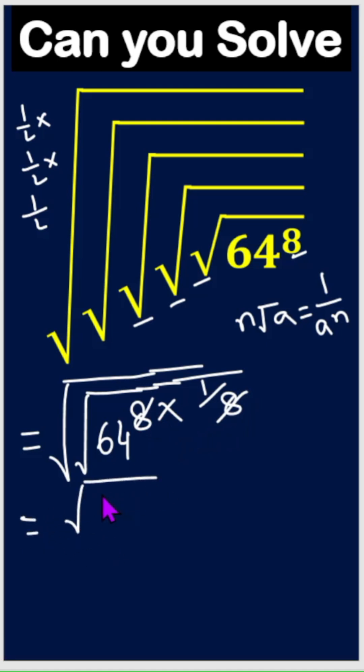So this is root, again root, then 64. So root 64 is 8 because 8 squared equals 64. So we can write root 8, okay?